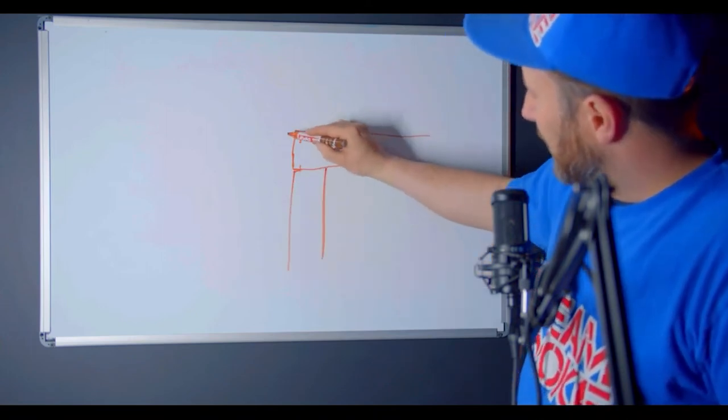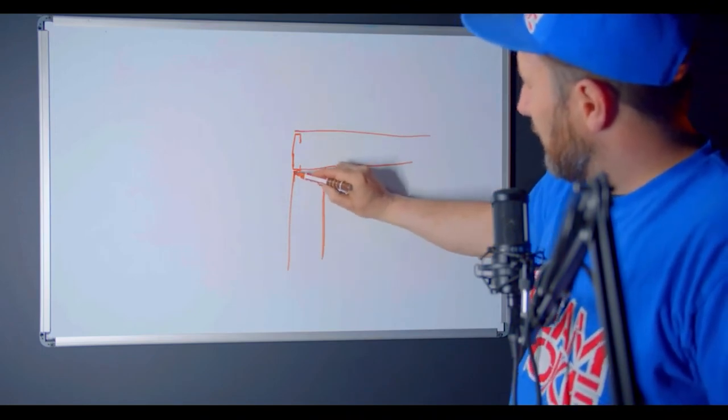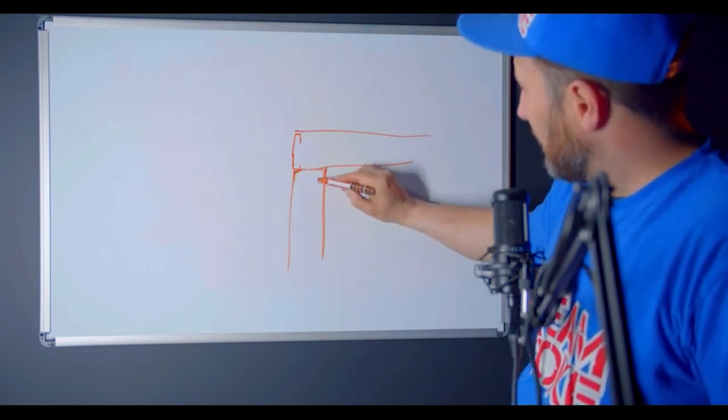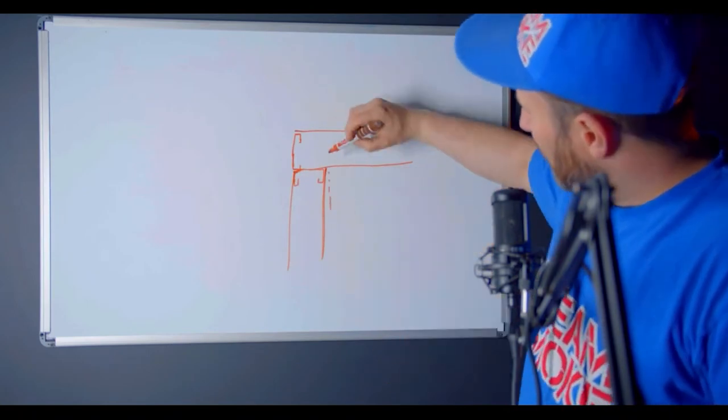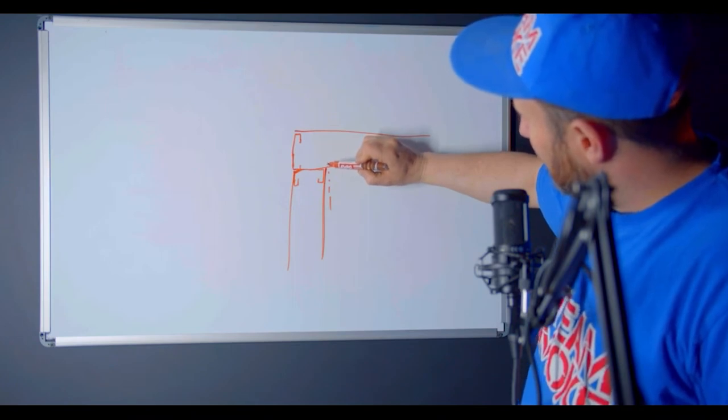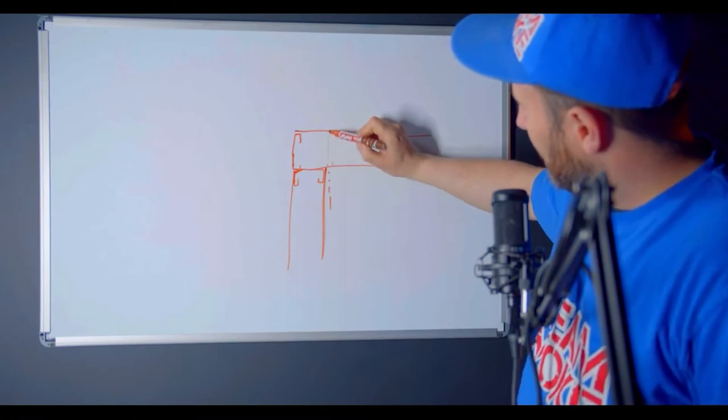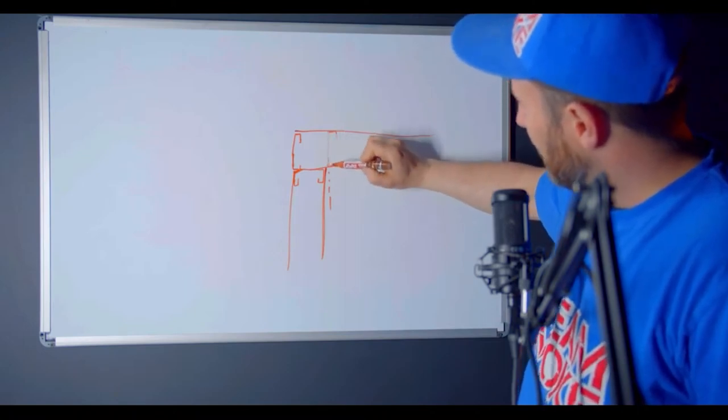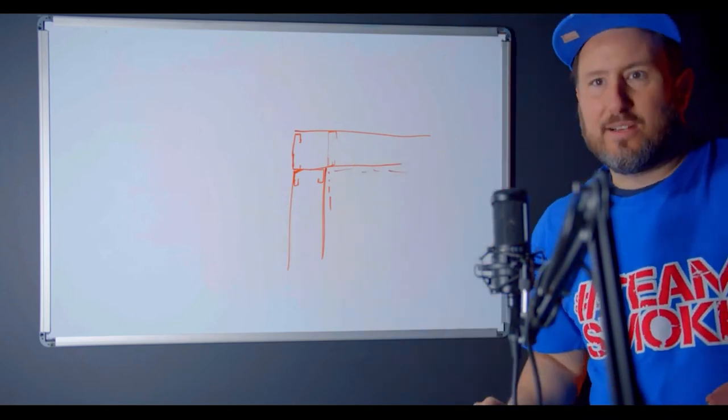So we got our stud on the outside here to catch the outside corner. We put a stud here to catch this inside corner, and then what I do is I come in a quarter inch or a half inch and put my other stud here to catch this inside drywall. So you see that configuration.